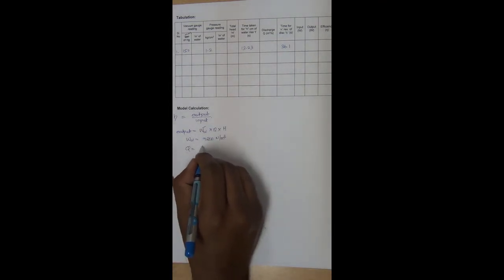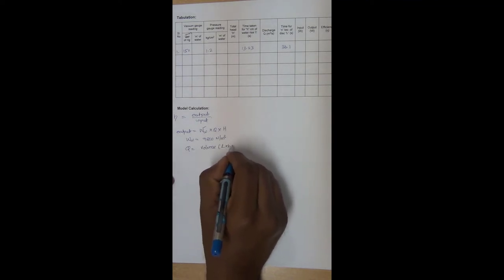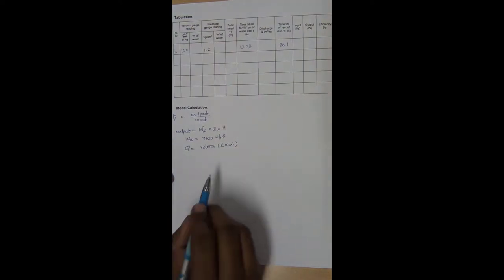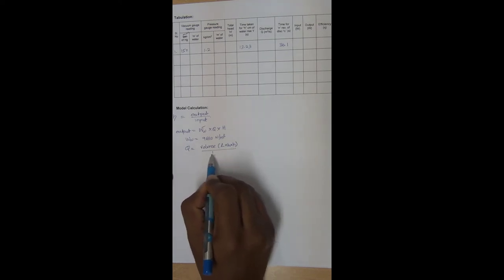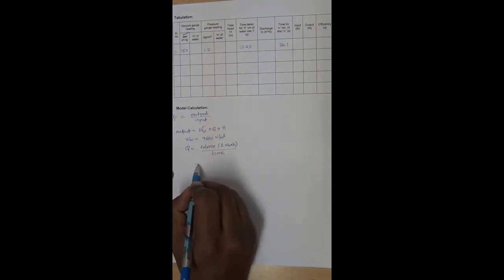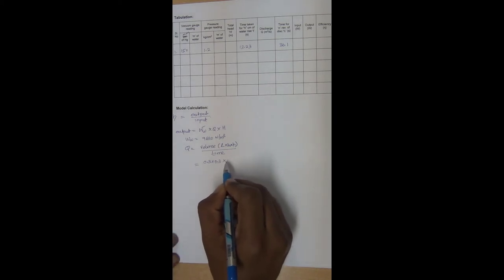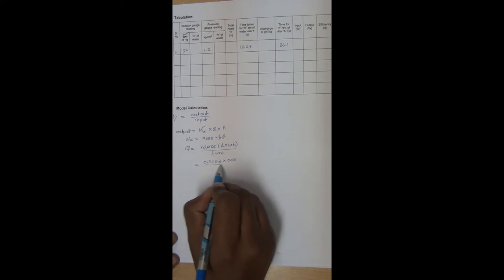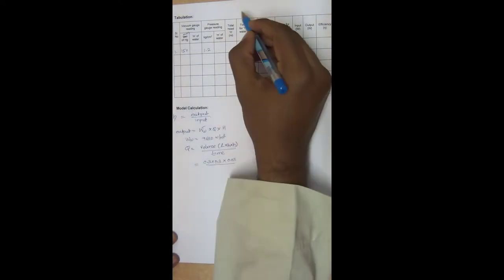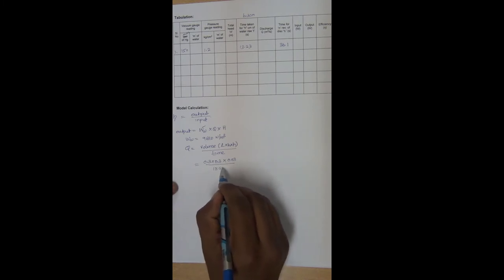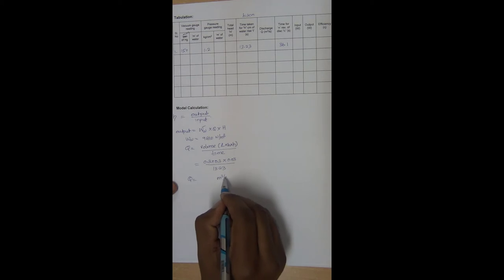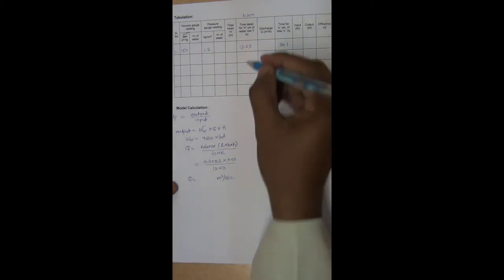Now to calculate Q we have volume which is length into breadth into height. So this H and this H is different. This is the height of the tank. This capital H is the total head or total pressure head. It applies for all the pumps. Divided by time taken. So volume is 0.3 into 0.3, length is 30 centimeter, breadth is 30 centimeter, and height we have assumed it as 3 centimeter. So it is 0.03 divided by time. Time is this time, time taken for H centimeter. H we have assumed here as 3 centimeter. So 13.23. So Q is equal to answer in terms of meter cube per second. So we have got this column Q.